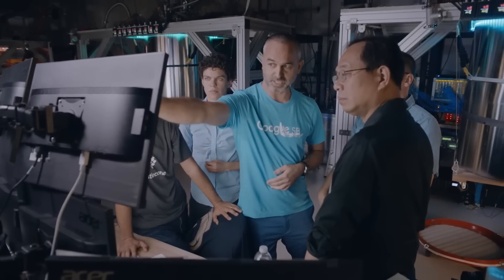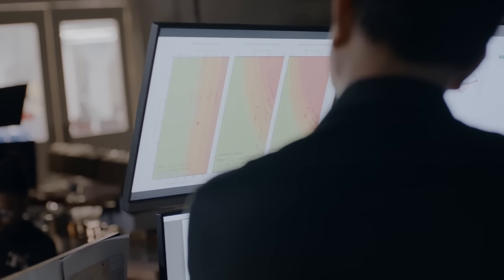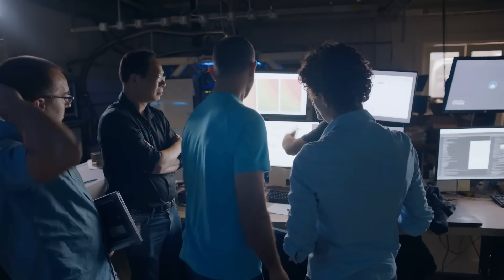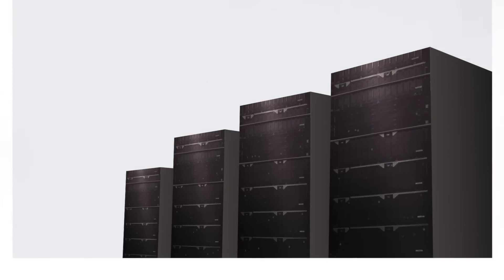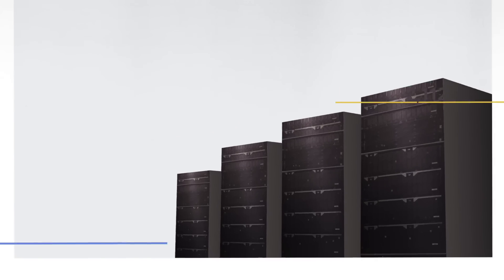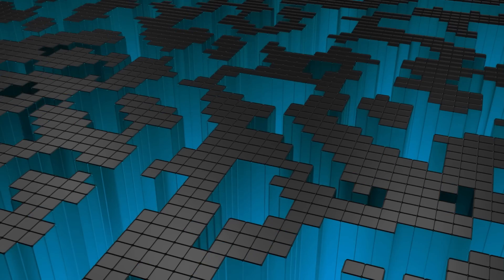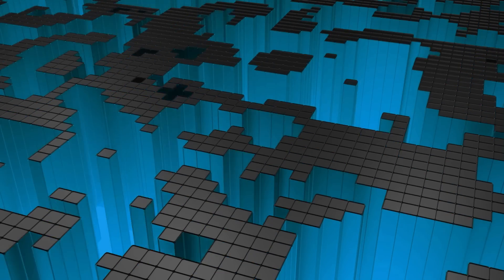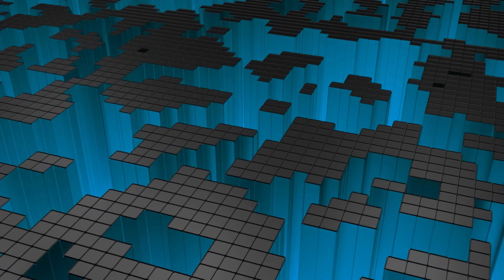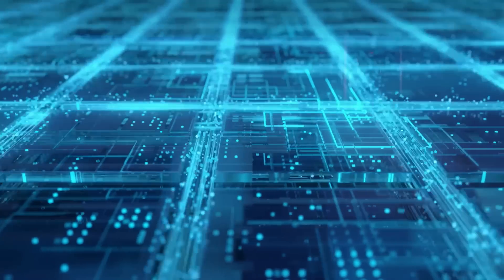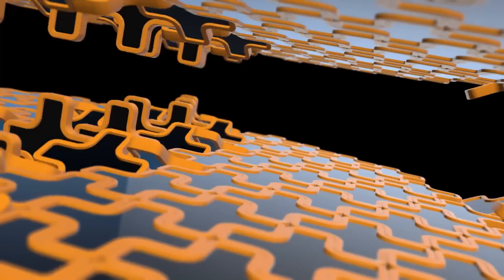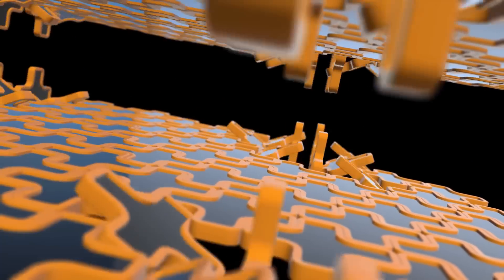One of quantum computing's most exciting aspects is its ability to perform parallel computations. Thanks to superposition, qubits can exist in multiple states simultaneously, allowing quantum computers to process many possibilities at once. This could enable them to solve problems in mere moments that would take classical computers millions of years. Picture solving a giant puzzle. A classical computer would test one piece at a time, trying different combinations. A quantum computer, on the other hand, could test multiple combinations simultaneously, thanks to its parallel processing power.